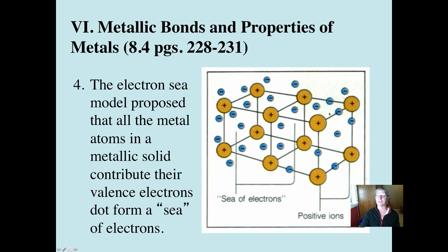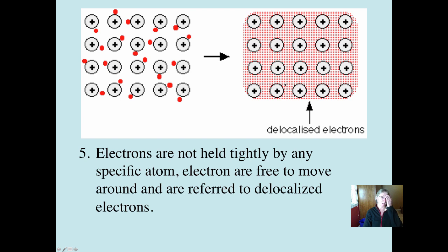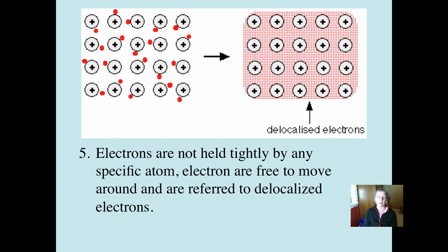What causes all these positive centers to stay together is interesting. The attraction occurs between the negative electrons and these positive centers. The electrons that are delocalized are free to flow throughout this matrix between the atoms, and the attractions are between negative electrons and positive centers. These free-flowing electrons convey the properties we talked about with the pot of gold.